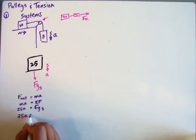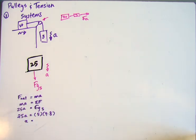So 25A equals 5 times 9.8. So A is simply going to be equal to 49 divided by 25.